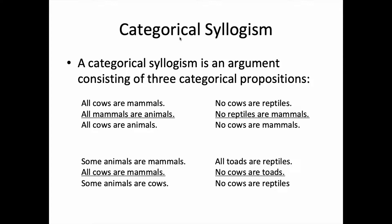No cows are reptiles. No reptiles are mammals. No cows are mammals. And all toads are reptiles. No cows are toads. So no cows are reptiles.